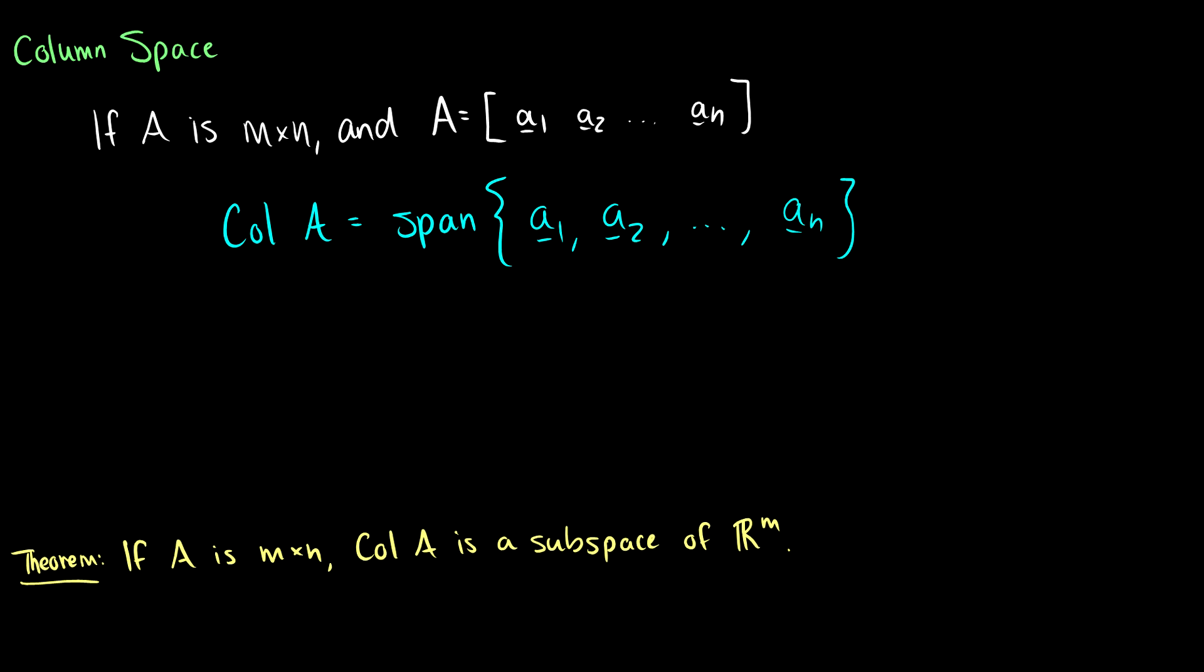So if A is an m by n matrix and A is equal to the columns A1, A2, all the way up to An, then the column space of A is just equal to the span of all the vectors in A. We can also write this as the set of b such that b equals Ax for some x in R^n.